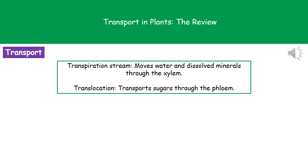Welcome to our review on transport in plants. First thing we need to understand are two key terms and their meanings. When we're talking about the transpiration stream, we're talking about the thing that's going to be moving water and dissolved minerals through the xylem. And when we're talking about translocation, we're talking about the transport of sugars through the phloem.